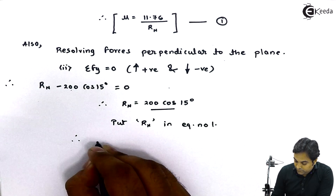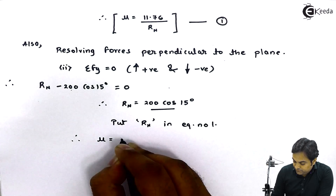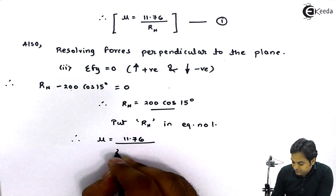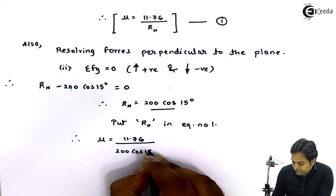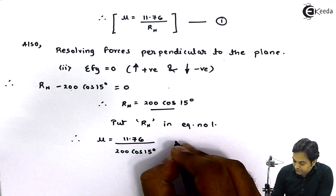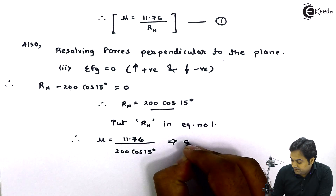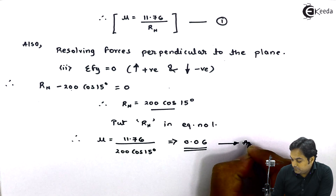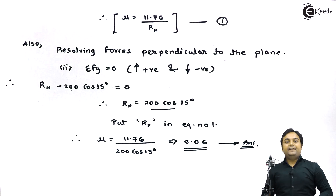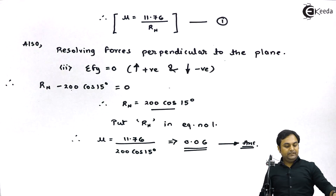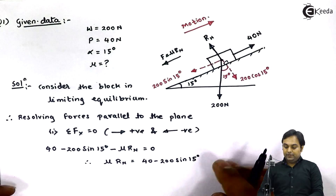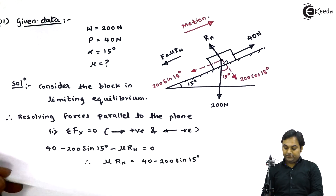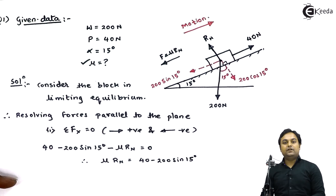Therefore mu equals 11.76 divided by 200 cos 15 degrees. Calculating this, mu comes out to be 0.06. That is the coefficient of friction between the block and the inclined plane. With this, we complete question number one.